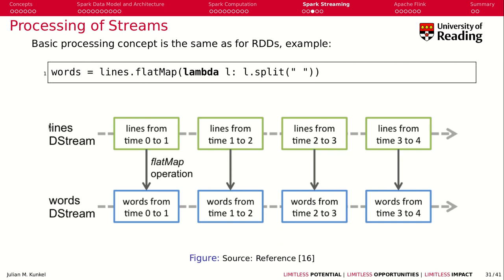We get as an input our lines as a stream. We get the lines for a certain time period from time 0 to 1, whatever the interval here is. Now, we run the flatMap operation, and we get the words from time 0 to 1 as an output. And then we do the same for time 1 to 2, and so on.